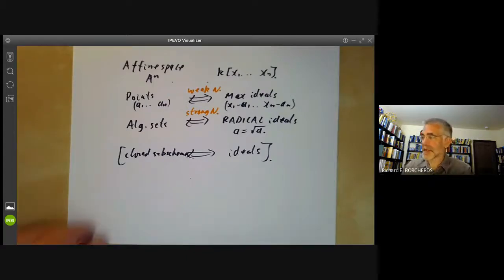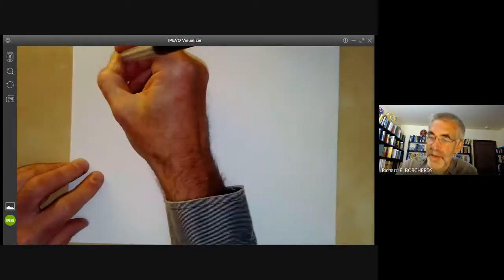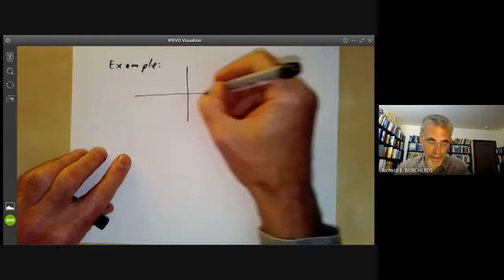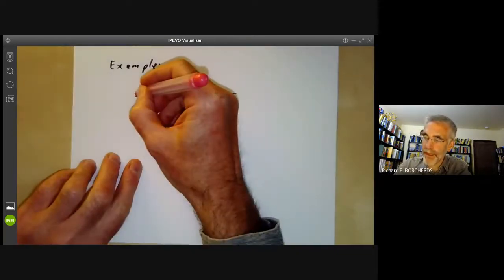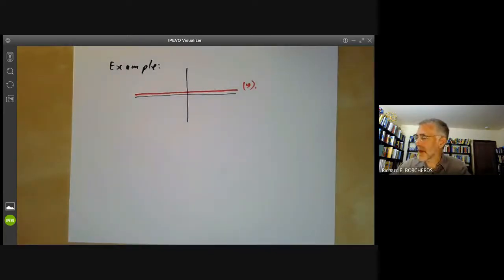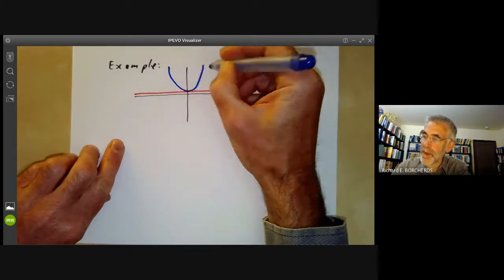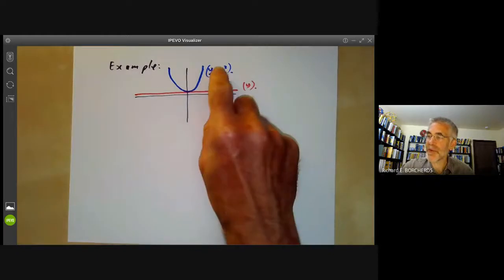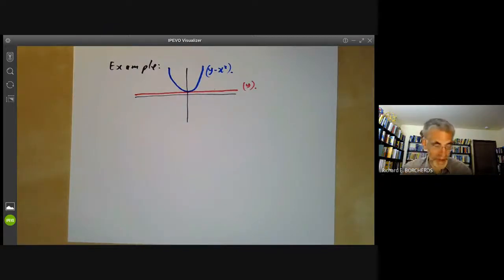So let's see a few examples of this. So it's the first example. Let's take a line. So this corresponds, this is just the line y equals naught, so it corresponds to the ideal (y). And we can take a parabola which corresponds to the ideal (y - x^2). So here we have two perfectly good radical ideals.